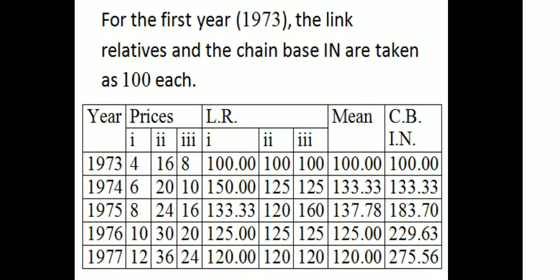For the first year, the Link Relatives and Chain-based Index are all 100. For example, the link relative for a price of 20 divided by the preceding year price gives values such as 150. Dividing summed Link Relatives by 3 gives averages like 133.33. Applying the chain index formula: 133.33 × 100 / 100 = 133.33 for one year, and 137.78 × 133.33 / 100 = 183.70 for the following year.